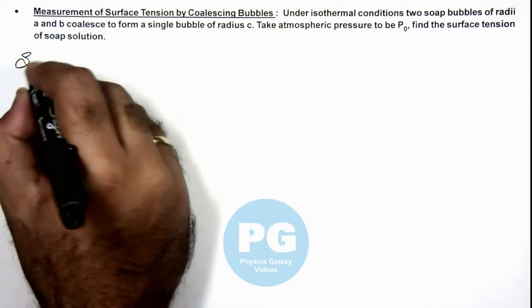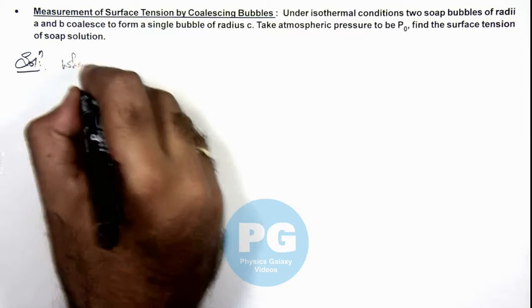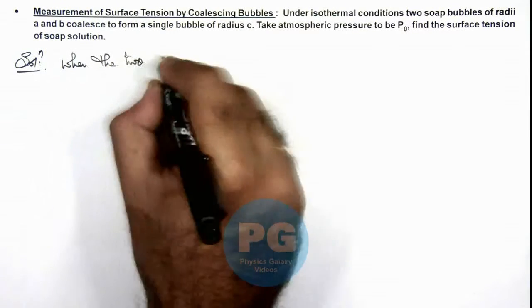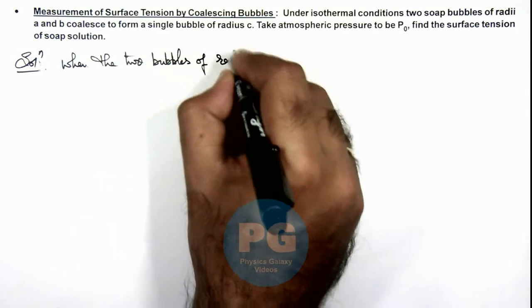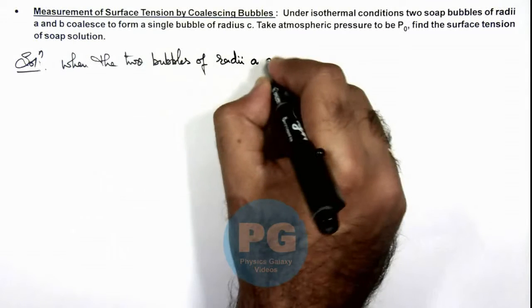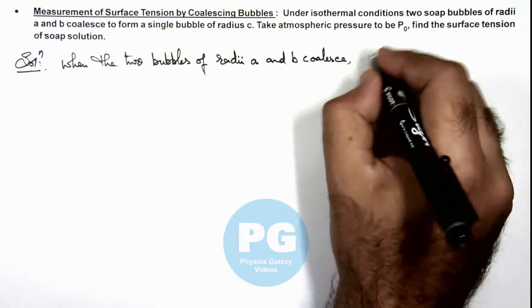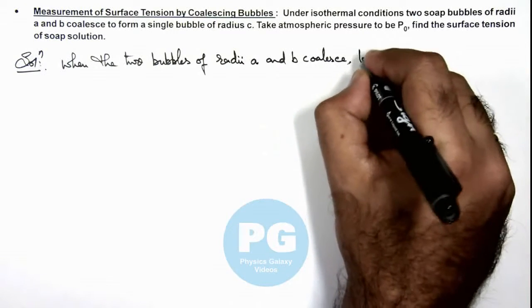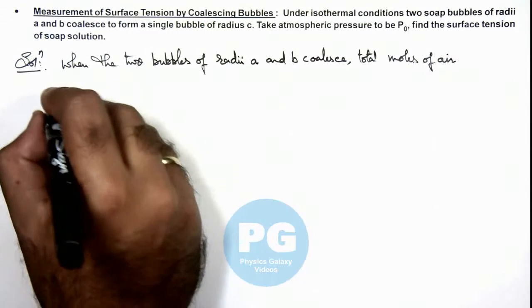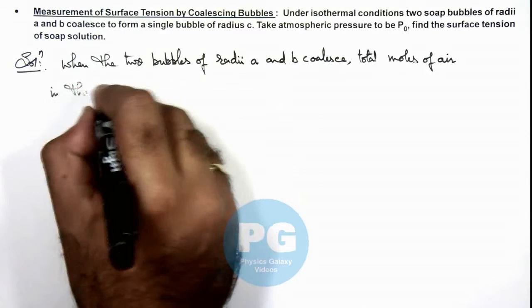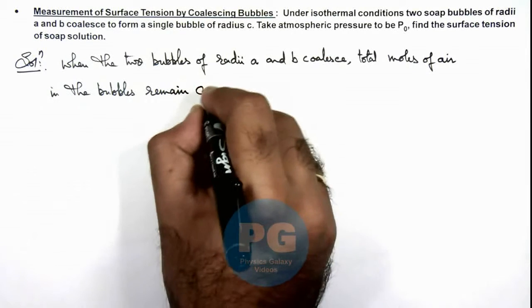Now in this situation, we can say that when the two bubbles of radii a and b coalesce, we can consider the total moles of air in the bubbles remain conserved.